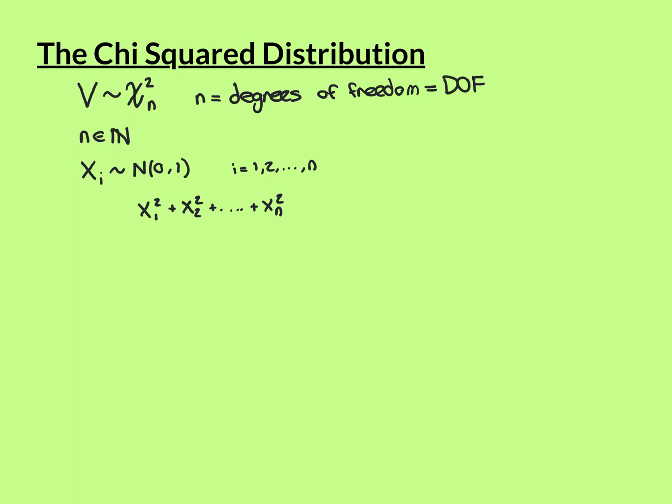Now let's look at where the chi-square distribution actually comes from. We're going to consider some standard normals, because the chi-square distribution comes from the squares of standard normals — that's why it's called the chi-square distribution, that's where the 'squared' comes from. We take random variables x_i that are standard normally distributed — that is, distributed Normal(0,1), mean 0 and variance 1 — and they are independent and identically distributed.